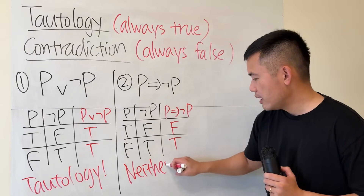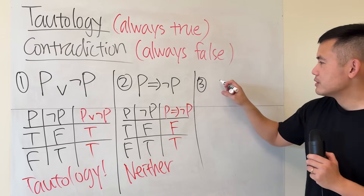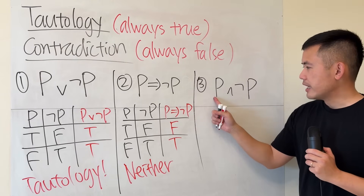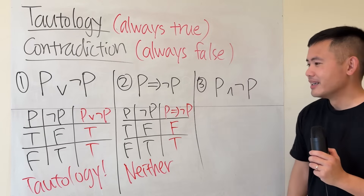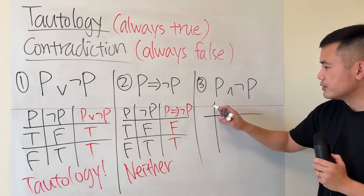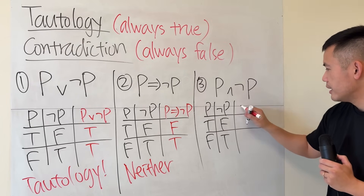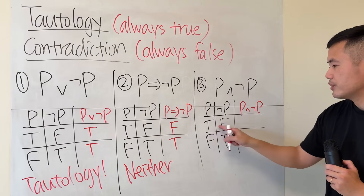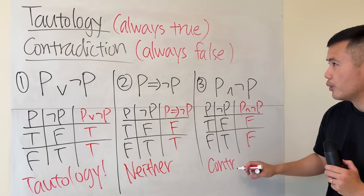Example 3: p AND not p. This is an AND statement. 'It rains today AND it's not raining today' — that's not possible. From the truth table: p and not p give true/false and false/true. For p AND not p: true and false is false, false and true is false. We always get false, so this is a contradiction.